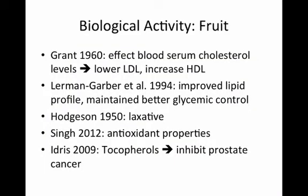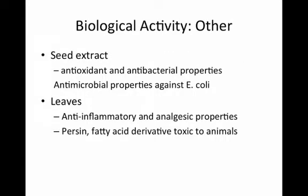Several studies have been done on the biological activity of the avocado fruit. For example, one study showed that the avocado had an effect on blood serum cholesterol levels. Other parts of the plant have also been found to contain biologically active compounds, such as antioxidant and antimicrobial properties found in the seeds, as well as anti-inflammatory and analgesic properties. Also, the leaves contain a compound called persin, which is toxic to many animals.